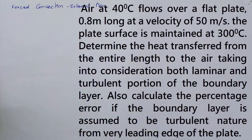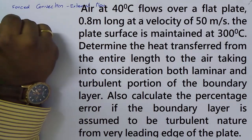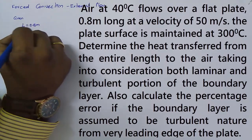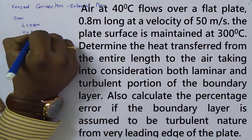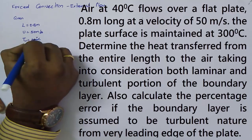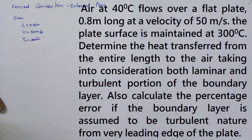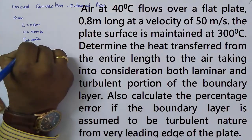The problem: air at 40°C flows over a flat plate of 0.8 meter long at a velocity of 50 meters per second. Given: length L = 0.8 m, velocity u = 50 m/s, plate surface temperature Tw = 300°C. Determine the heat transferred from the entire length of the plate considering both laminar and turbulent portions of the boundary layer. Also calculate the percentage error if the boundary layer is assumed to be turbulent from the leading edge.